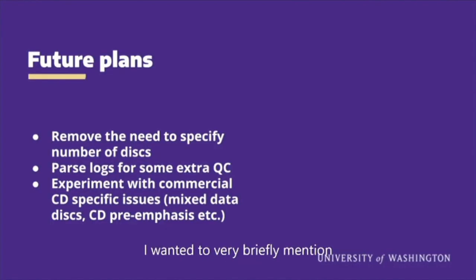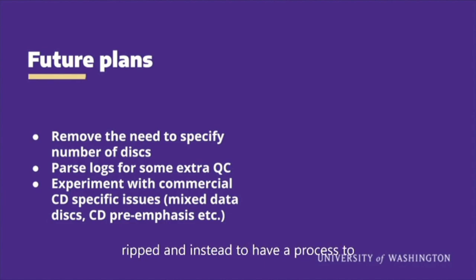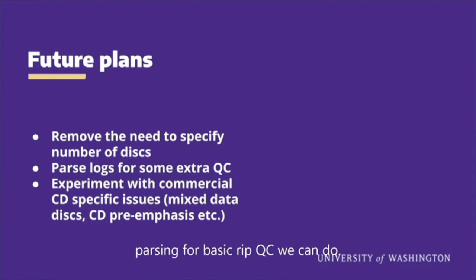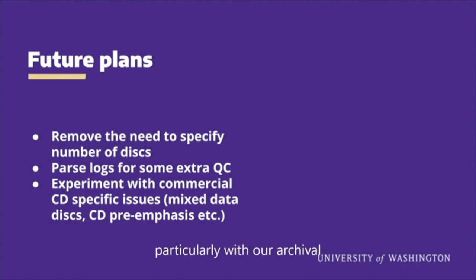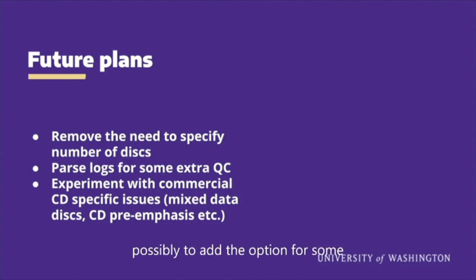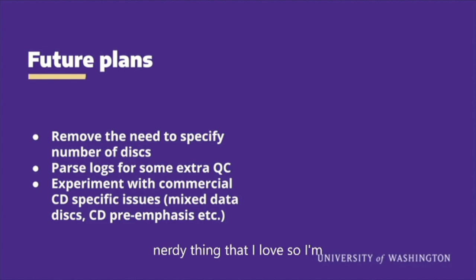Looking at future plans for the tool, the first change we are looking to make is to eliminate the need to specify the number of disks to be ripped, and instead have a process to automatically turn off after a couple of load attempts where the robot finds no disk — keeping the ripping process as simple as possible to cut down on training. I also want to look into log parsing for basic rip QC. Lastly, I need to experiment with how Qtools handles CDs with pre-emphasis applied. We do contain CDs in the collection with pre-emphasis that might need to go through the preservation workflow, and I intend to test what flags Qtools creates to reflect emphasis detection, then possibly add the option for automatic de-emphasis to be applied to a mezzanine file via ffmpeg.